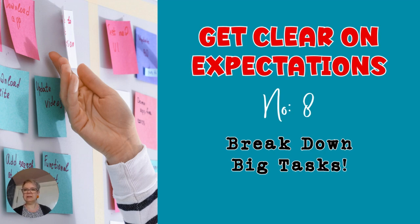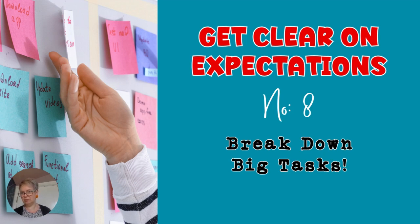Get clear on expectations. Number eight: break down big tasks. Divide complex tasks — break down large or vague tasks into smaller, manageable parts that you can tackle step by step. Confirm next steps — after completing a task, check with the teacher or SENCO on what should come next. Use bullet points — when presented with vague instructions, ask the teacher to break it down into bullet points to make it easier to follow. That's what you do for a student, so do it for yourself too.